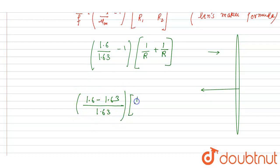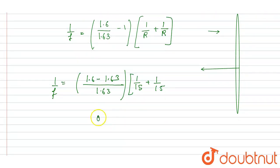So I will write 1 by 15 plus 1 by 15, it is equals to 1 by f, 1 by f, right? So it will be 0.03 with a negative sign here.